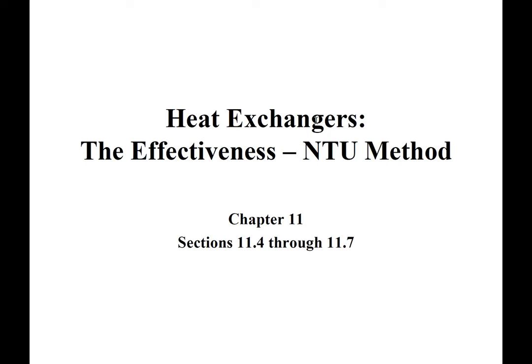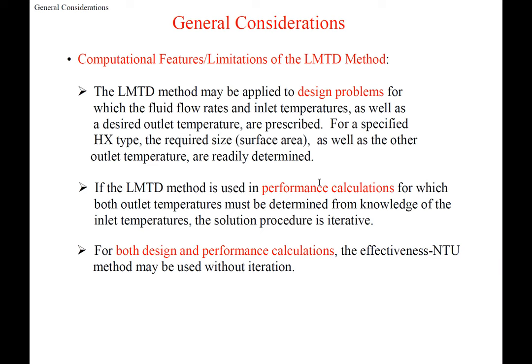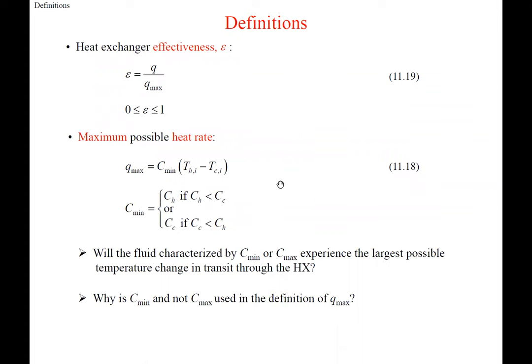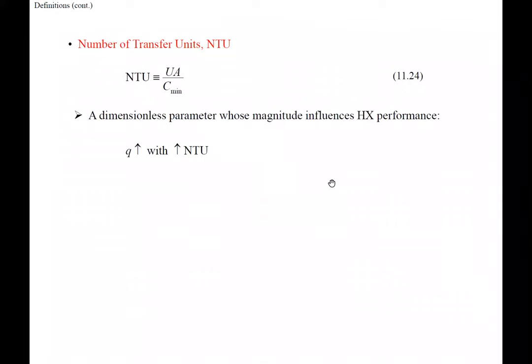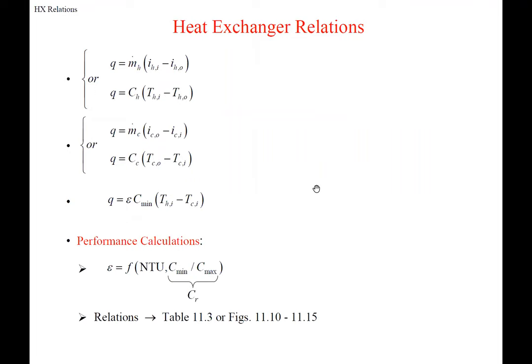From Chapter 11, we'll cover the Effectiveness-NTU method and then do some examples. As a quick review, we talked about the log mean temperature difference method in the other set of slides, and now in this set is the Effectiveness-NTU method. This deals with the effectiveness of the heat exchanger: Q actual over the maximum possible heat rate, using the minimum heat capacity rate and the difference in inlet temperatures of the cold and hot streams. The number of transfer units (NTU) is the overall heat transfer coefficient times area over that minimum heat capacity rate — a dimensionless parameter.